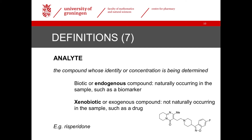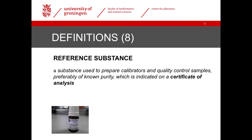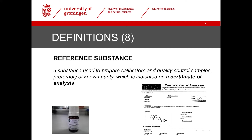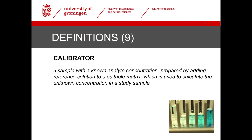An example that will return several times in this course as an illustration is the anti-schizophrenic drug risperidone. For quantitative bioanalysis it is essential to have a good reference substance of an analyte — that's usually a powder or a solution. Such a reference substance is used to prepare samples with exactly known concentrations, such as calibrators and QC samples. The purity of a reference substance has to be known and is usually indicated on a certificate of analysis, as shown here for risperidone. The concentration of an analyte in a study sample is determined by reference to a set of calibrators which all contain different but known concentrations of the analyte — a set of these calibrators is called a calibration curve or calibration line.